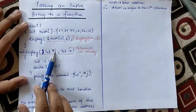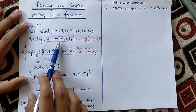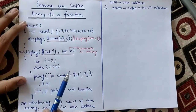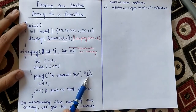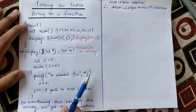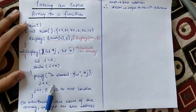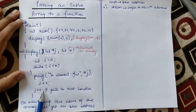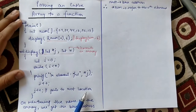Since j is initially pointing to the base address of the array, it will print the first element. `*j` means value at the address, so it will print the first element. Then i will be incremented and j will be incremented — this is pointer arithmetic and it will point to the next location.